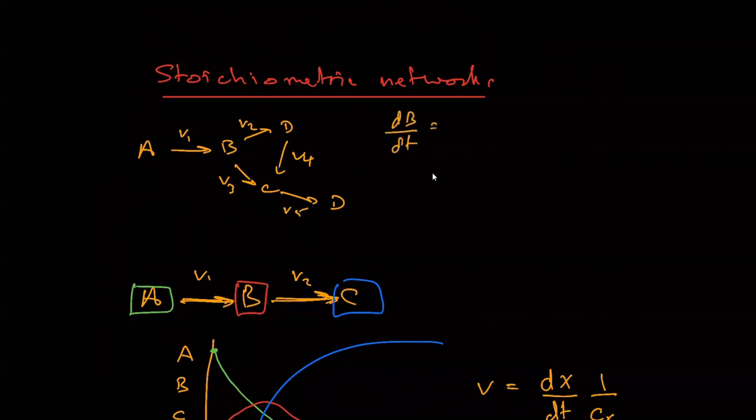The rate of change of B, it's coming in, there's mass coming into B from V1, so it's plus V1. And it's disappearing by two routes, minus V2 and minus V3. So basically all we're doing, we're just using conservation of mass to take into account the inflows and the outflows at a particular species.